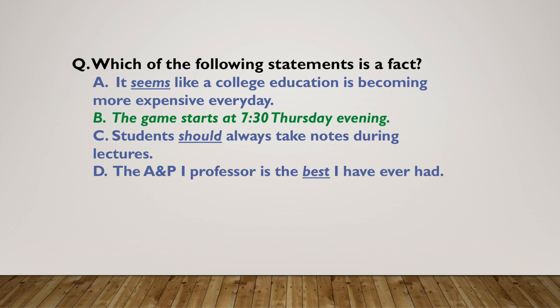In the first sentence, A, the word 'seems' indicates that it's an opinion. On C, the word 'should' indicates opinion. On D, the word 'best' indicates an opinion.